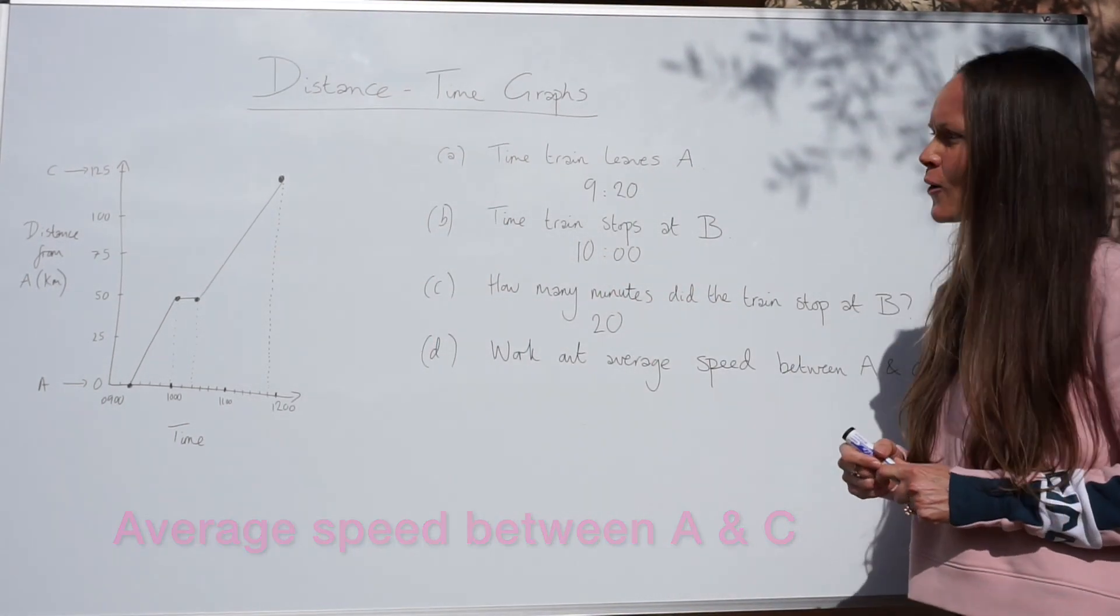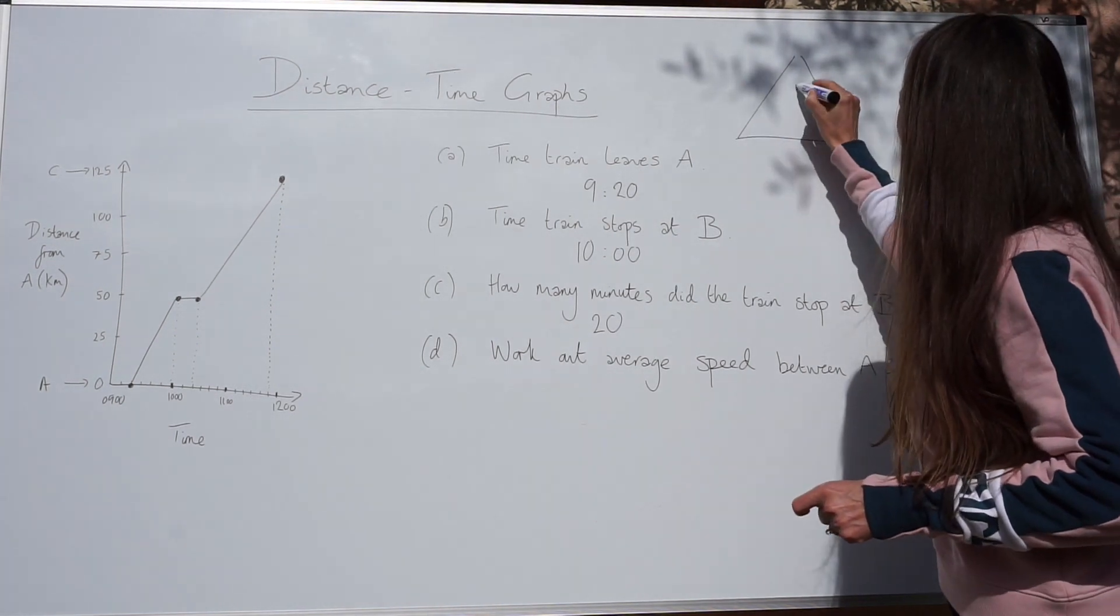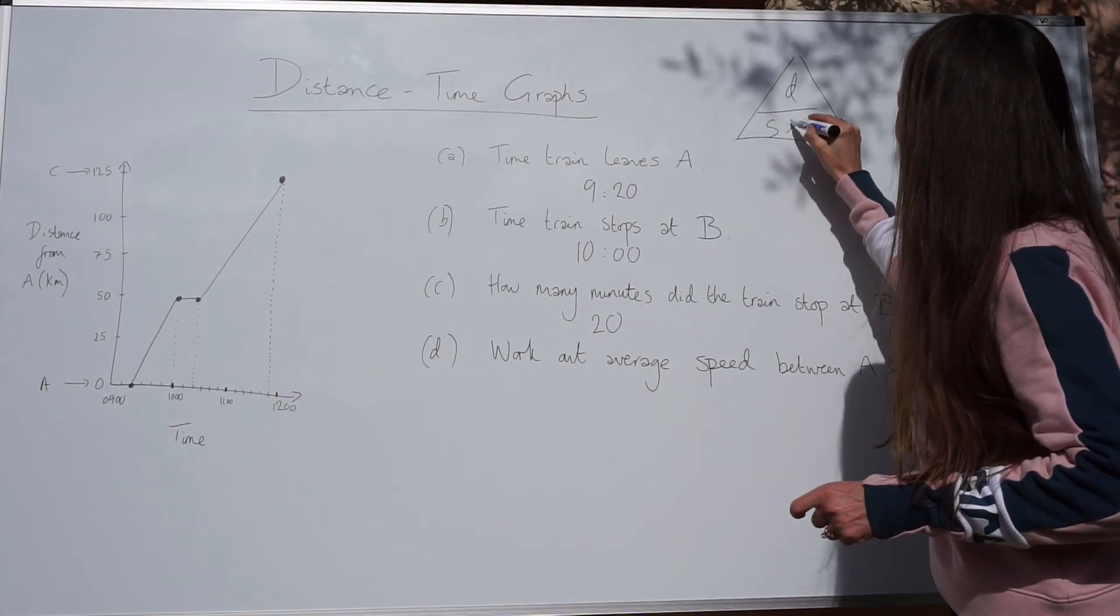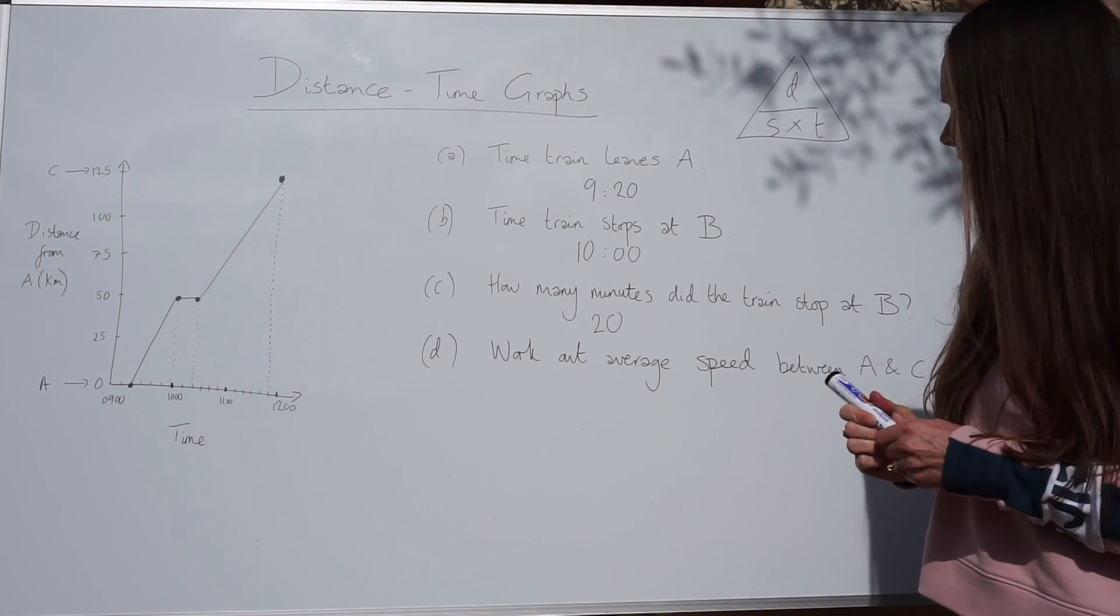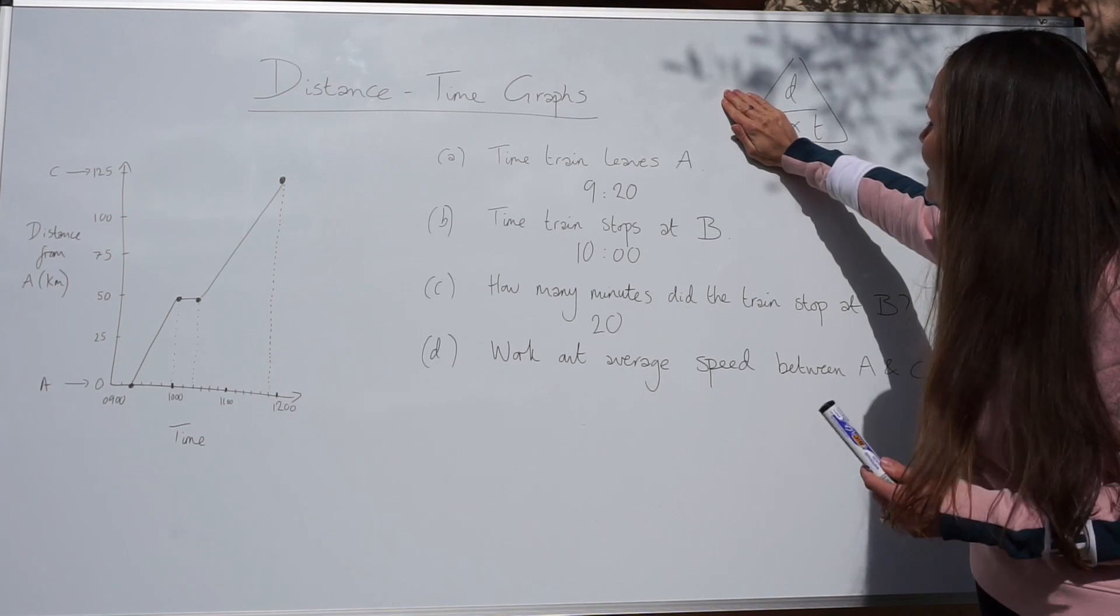For part D, we have to work out the average speed between A and C. If you've seen my other videos on speed and distance time graphs, you'll know I like to use this triangle connecting distance, speed and time. So to work out the average speed, we have to divide the total distance by the total time.